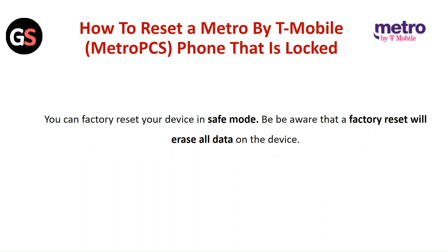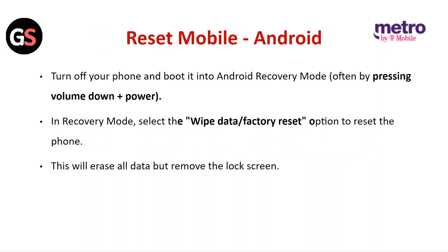To reset an Android mobile, turn off your phone and boot it into the Android recovery mode. In recovery mode, select the 'Wipe Data / Factory Reset' option to reset the phone. This will erase all your data but remove the lock screen.